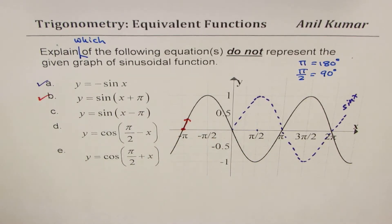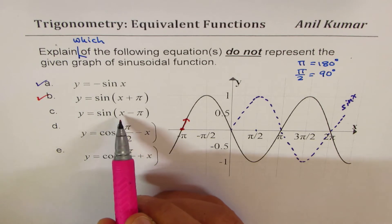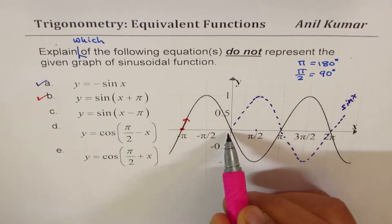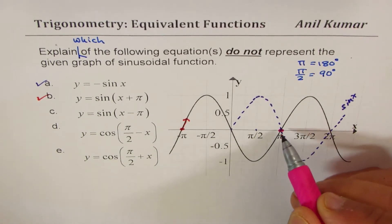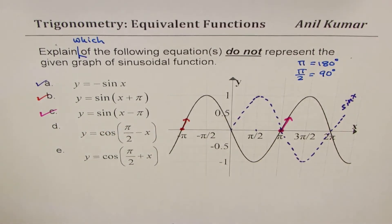The next one here is y equals sine of x minus pi. That means if I check from pi, it is going upwards, so that is also correct. So this is also a correct equation.